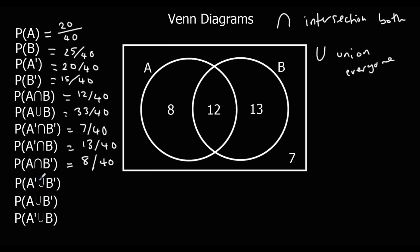The union this time — the union of not A and not B. Not A is those two sections and not B is those two sections. This time it's a union, so it's all of them added up. We've got 7 plus 13 is 20 plus 8, so 28 out of 40.